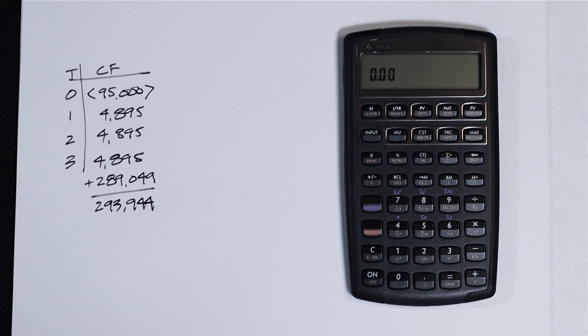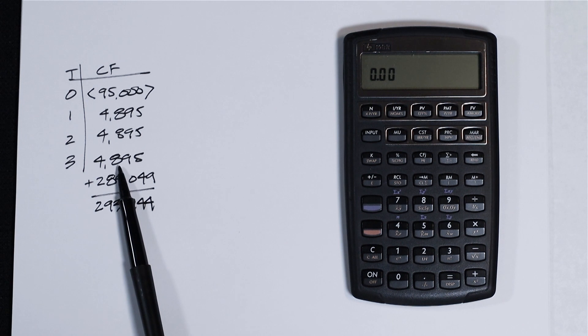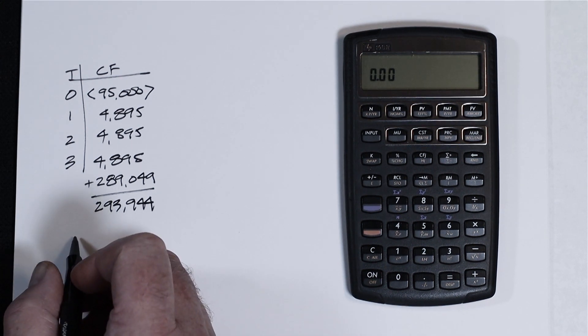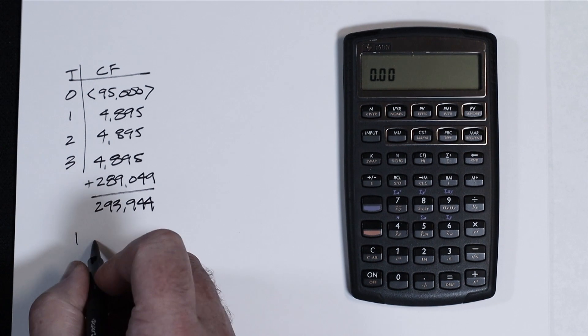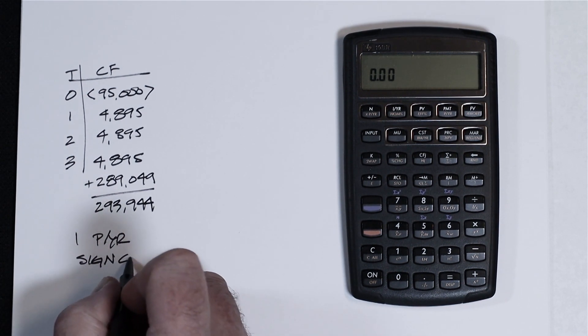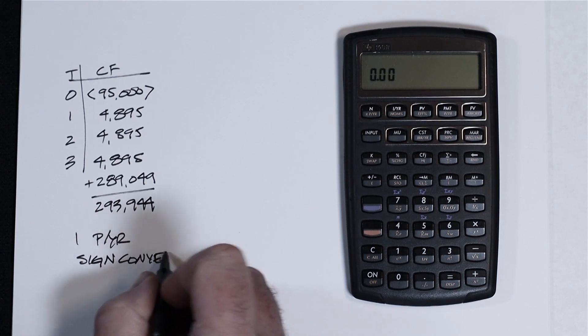And that would be your net sales proceeds or your pre-tax sales proceeds. That's a side calculation on the final year of cash flows plus net sales proceeds. On the hard calculator and the app that's similar, you don't have to do it that way. You could add these two up on the fly. You can do it either way. And let's remember when entering cash flows, we're in one payment per year, and we must pay attention to sign conventions.